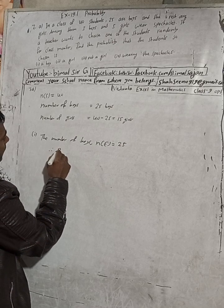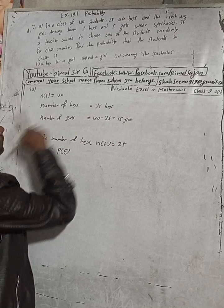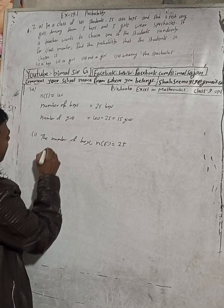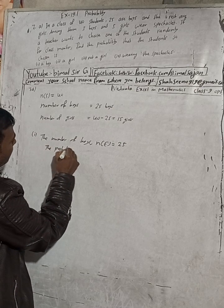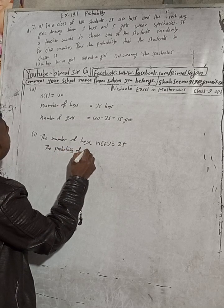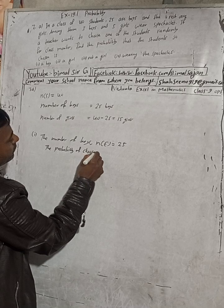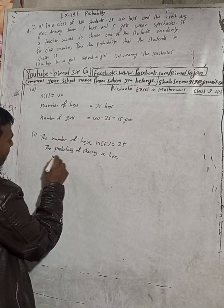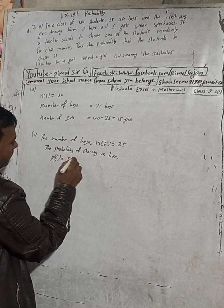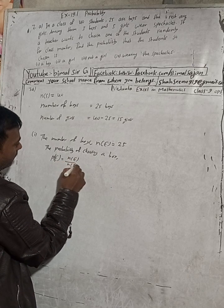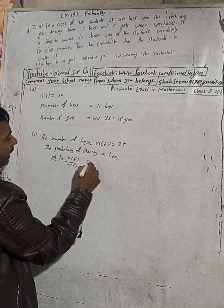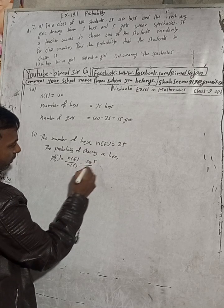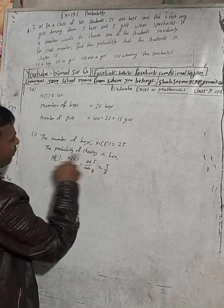Therefore P of E, that is the probability of choosing a boy, equals N of E divided by N of S. N of E is 25 and the sample space N of S is 40. So P(E) = 25/40. This can be simplified by dividing by 5, giving us 5/8. So the probability of choosing a boy is 5/8.